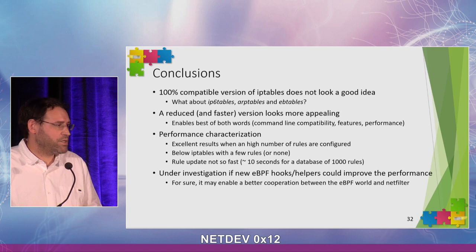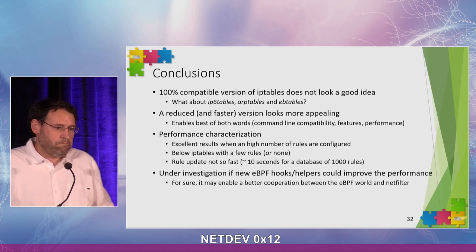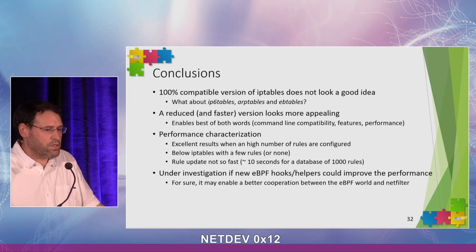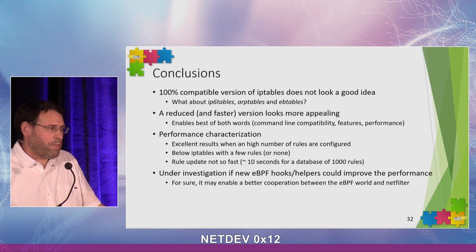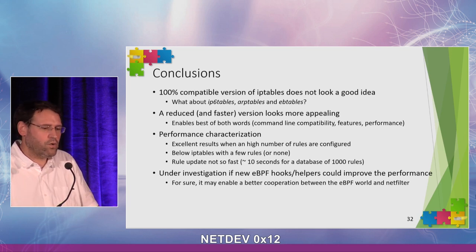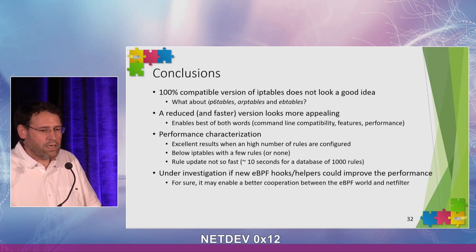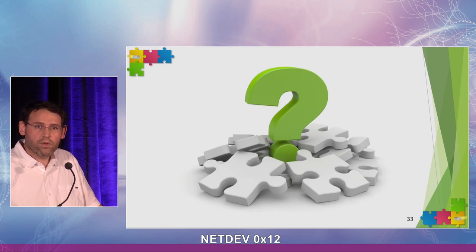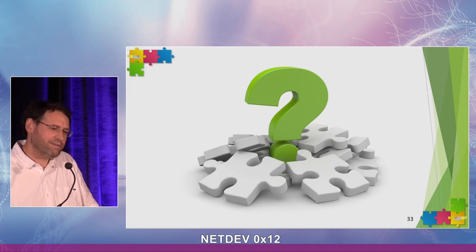In conclusion: a 100% compatible replacement of IP tables may not be a good idea, but a reduced first version looks more appealing. eBPF is good enough now to implement complex matching algorithms. The dynamically created pipeline can improve performance and allows runtime code optimization. Better cooperation with Linux NetFilter in terms of hooks or helpers is definitely a good direction to explore. A live demo is available on my laptop if you'd like to see it.